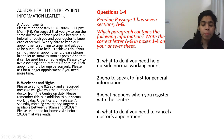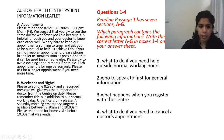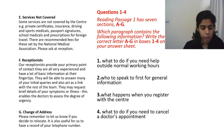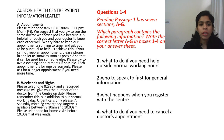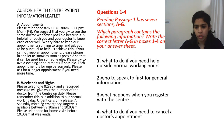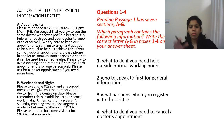Our passage today is the Austin Health Center Patient Information Leaflet. It has a total of seven paragraphs: A, B, C, D, E, F, and G. However, there are only four questions, and the question says: 'Reading Passage One has seven sections A to G — which paragraph contains the following information? Write the correct letter A to G in boxes one to four on your answer sheet.'